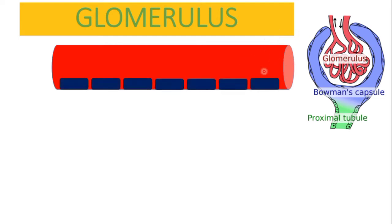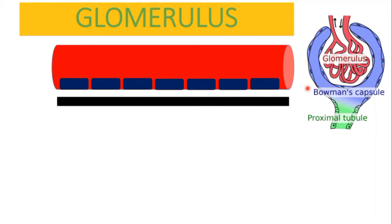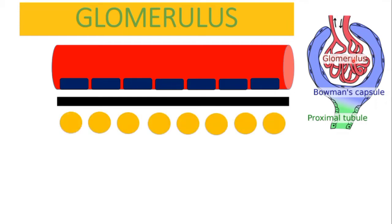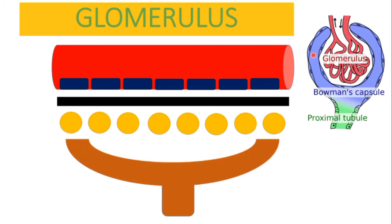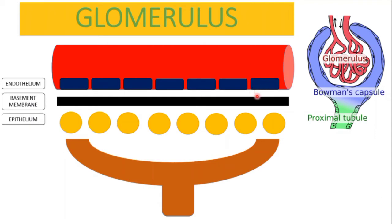In the blood vessel, it is lined with endothelial cells, and then there is a basement membrane. After that there are podocytes — these are the epithelial cells. Then there are the tubules. So to revise: we have the endothelial cells in the blood vessels, the basement membrane, and the epithelial cells which are the podocytes. These continue into the proximal tubule, then the distal tubule, and then the urine is excreted.